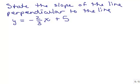So how would we do this problem? State the slope of the line perpendicular to y equals negative 2 thirds x. The slope of this line is negative 2 thirds. To find the perpendicular slope, I change the sign so it will be positive, and also take the reciprocal. So it will be 3 halves. And that's all there is to it.